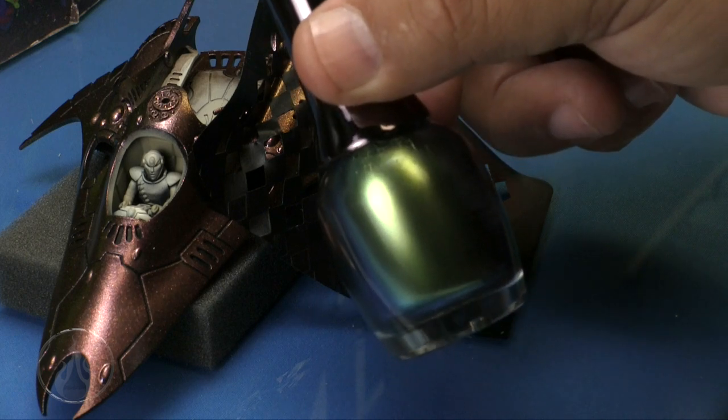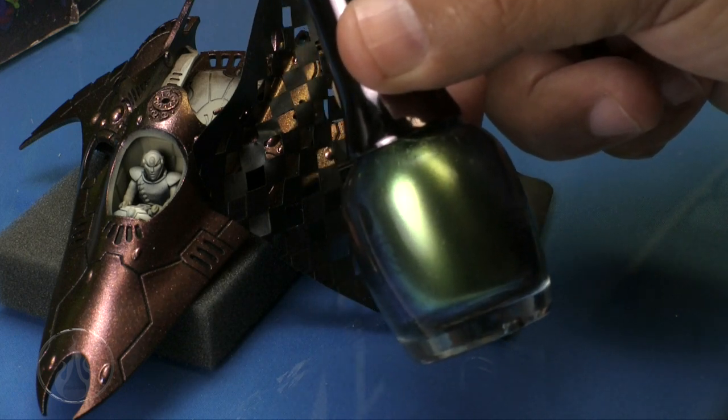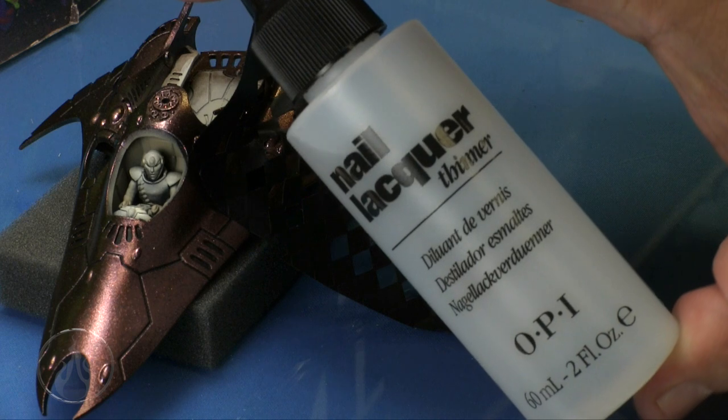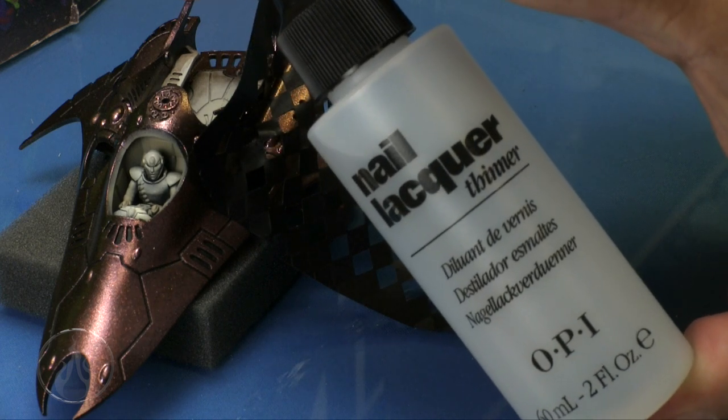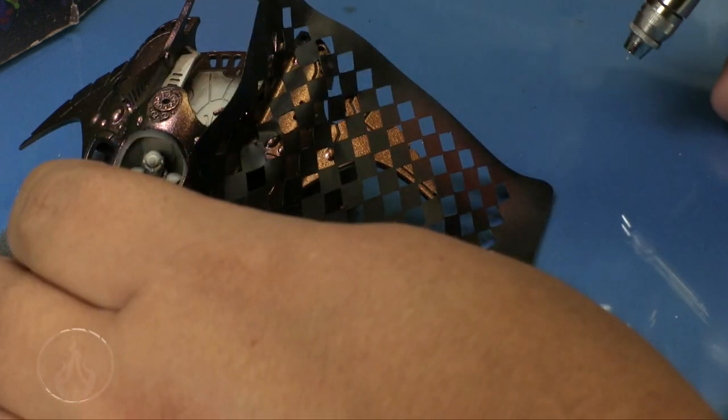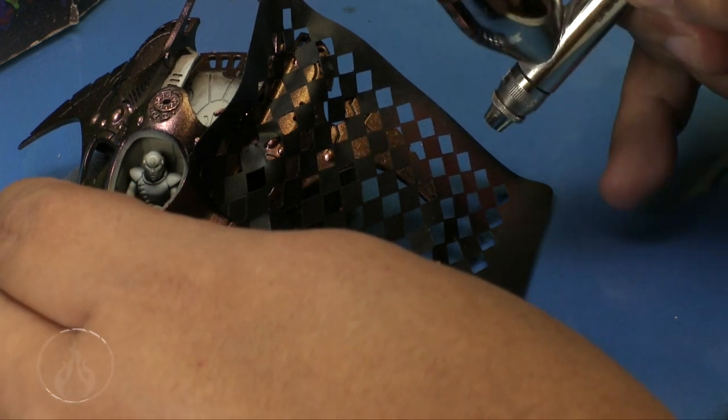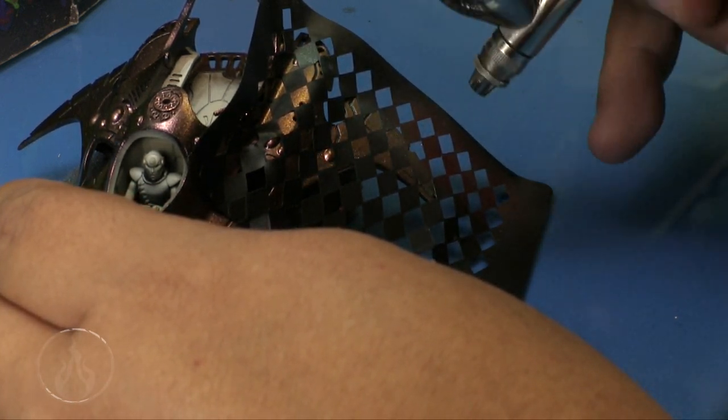I'm going to be using a similar nail polish from the same company, but this one is a different color. This one has a blue-green to it. I'm going to be using some nail polish thinner to thin it out, and I'm going to be spraying it around 15 PSI, thinned out just a little bit.